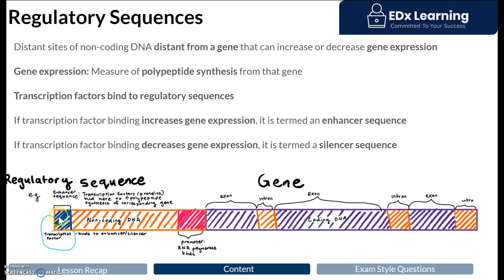If you have a mutation in a gene regulation region, although it doesn't directly code for a polypeptide, you can get incorrect up-regulation or down-regulation of that gene, which leads to disease. There is also a region of DNA known as a promoter, located directly upstream of the coding gene. The promoter is where RNA polymerase binds for transcription to begin. And that is our conclusion of non-coding DNA.